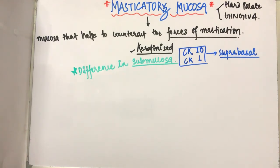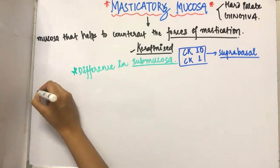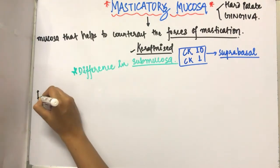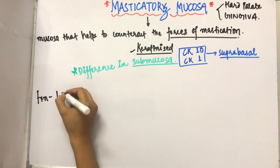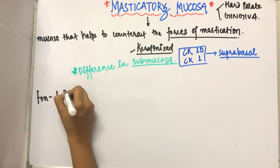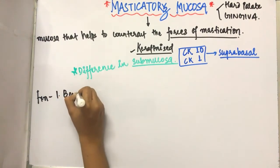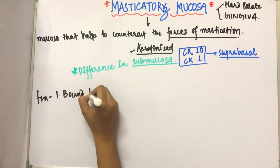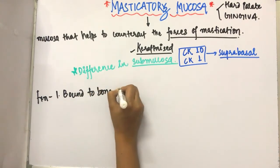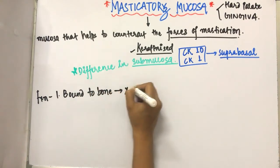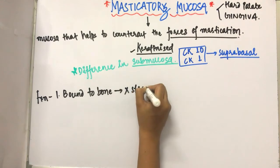Now let us look at the functions of the masticatory mucosa. The first function is that it is bound to the bone and it does not stretch.